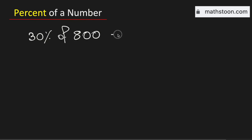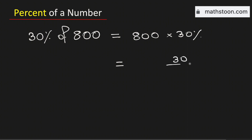To find 30% of 800 we will multiply 800 with 30%. Now we will write 30% as 30 over 100 and this 800 as 800 over 1.